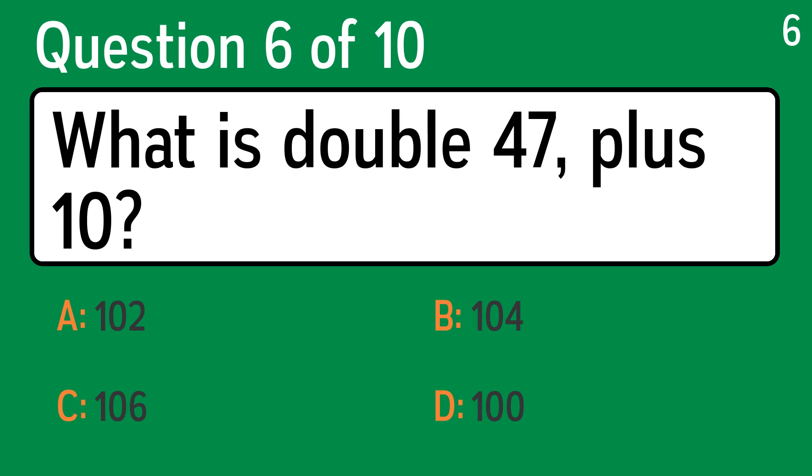Question six, what is double 47 plus 10? The correct answer is B, 104.